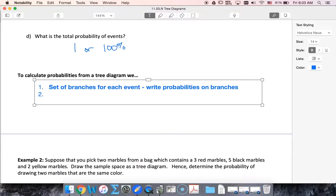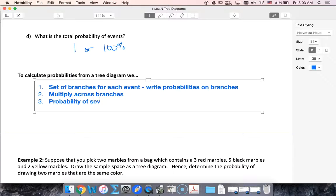To find a probability of two events, I'm gonna multiply across the branches.